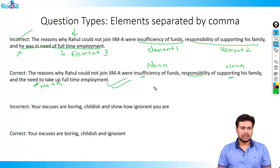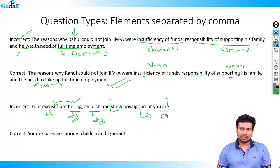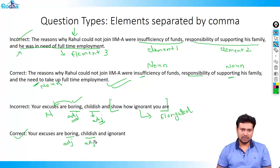Let's look at the next question: 'Your excuses are boring, childish, and show how ignorant you are.' Boring modifies excuses — excuses are a noun — so boring is an adjective. Childish also describes the excuse, so it is also an adjective. Therefore, the third part must also be in adjective form. The right answer is: 'Your excuses are boring, childish, and ignorant' — all three elements as adjectives — so parallelism is maintained.